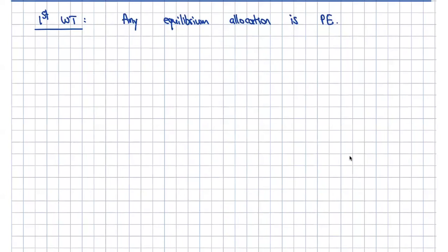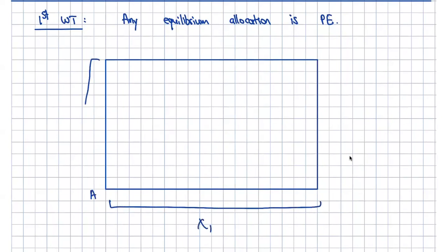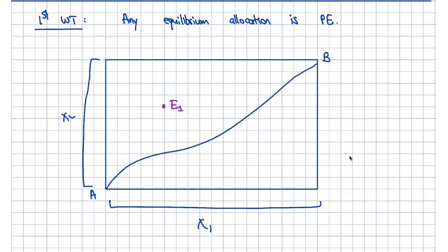The standard way to think about this is with the Edgeworth box. You have individual A here with good x1 and good x2, and individual B here. A particular point — for example, this one — could be an endowment point, endowment one, a particular division of resources. We let these individuals trade with one another from a particular endowment, and they will end up in a particular situation. This line here could be what's known as the contract curve.